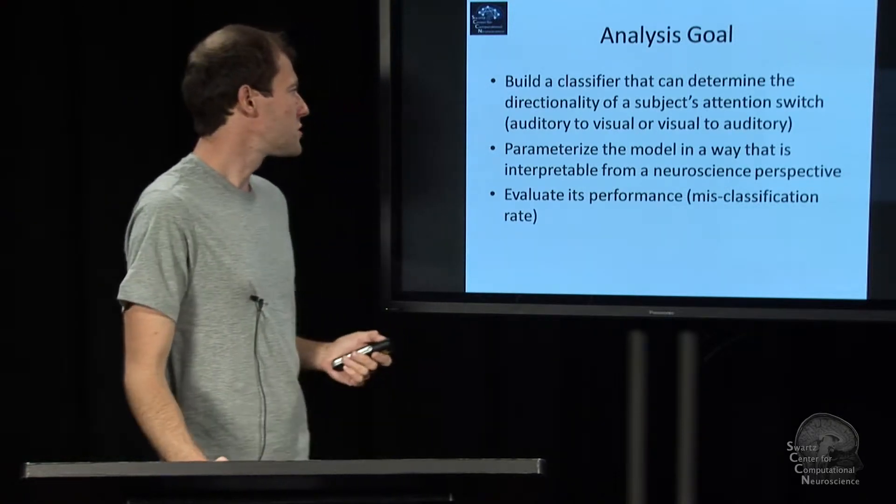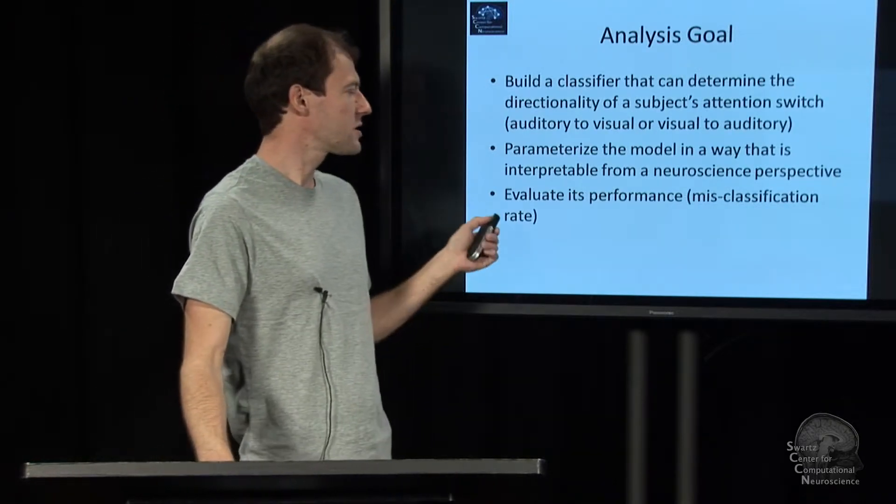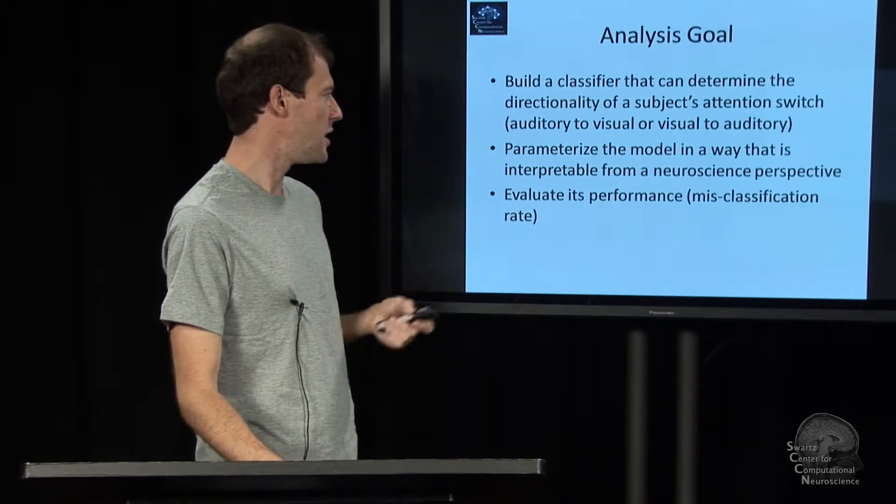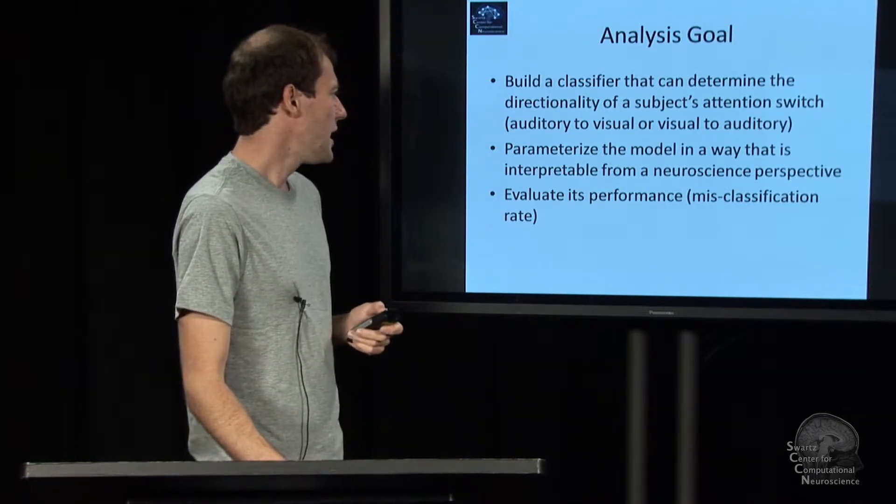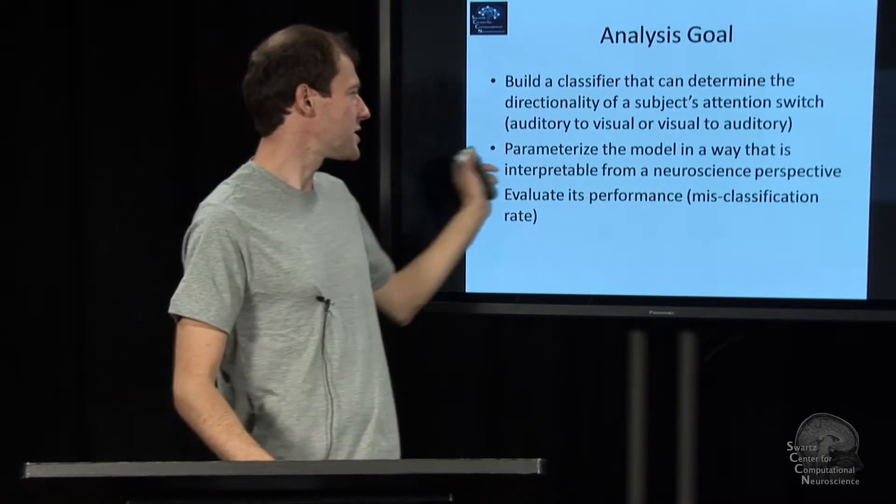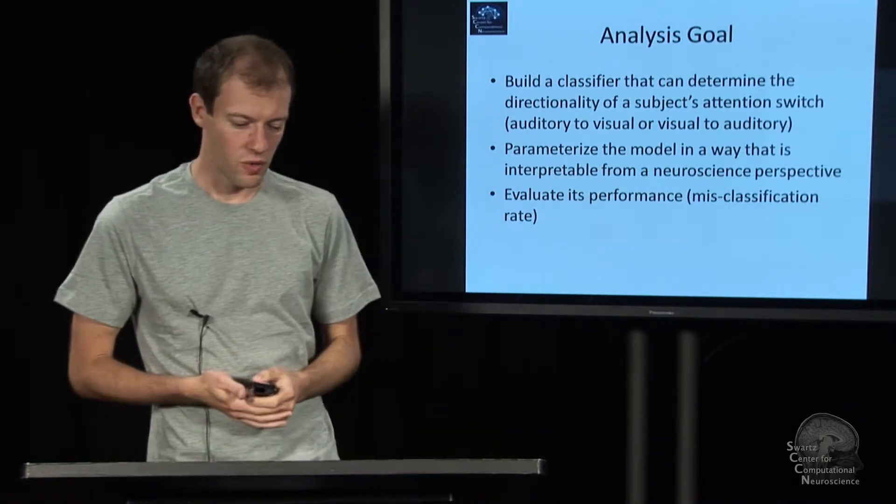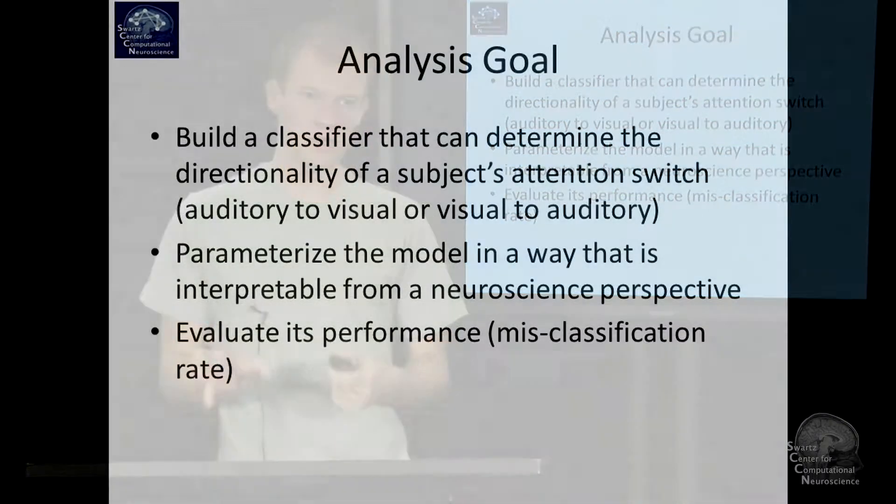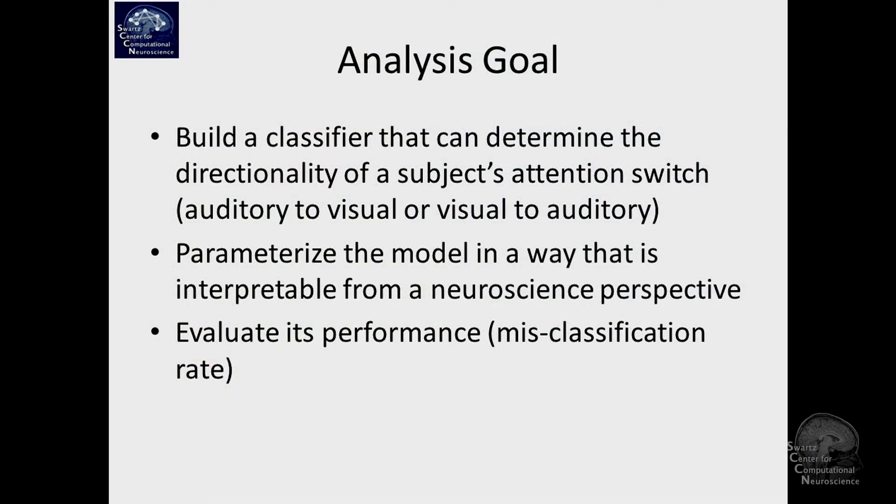So the goal is to build a classifier that can predict the direction of a person's attention switch relative to this cue and to design it in such a way that we can interpret from a neuroscience perspective what processes in a person's brain in a sense are relevant and then to evaluate how well that actually works, of course. It's basically online capable.